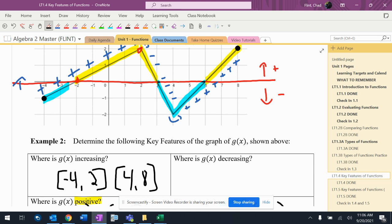Where is it decreasing? It's only decreasing in one section of this graph, and it's from two to four. Two to four is where it's decreasing.